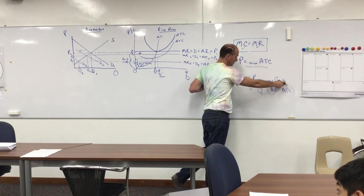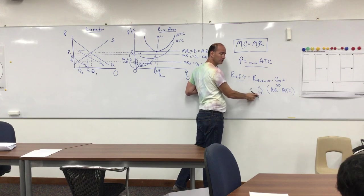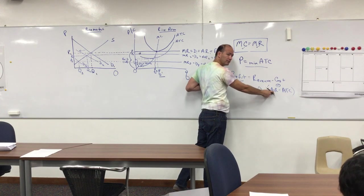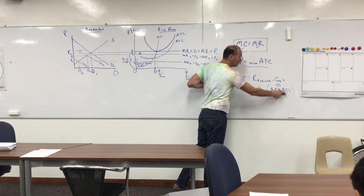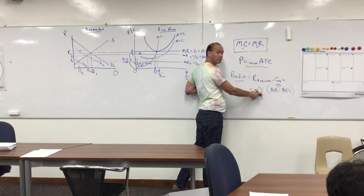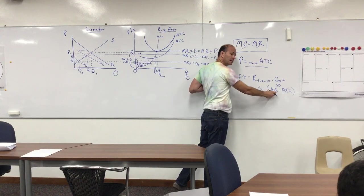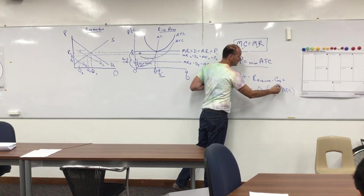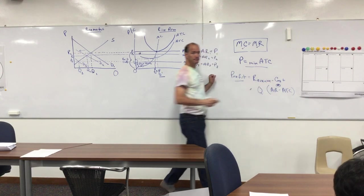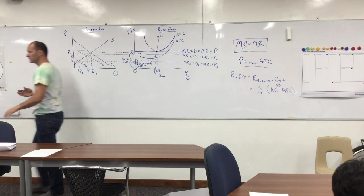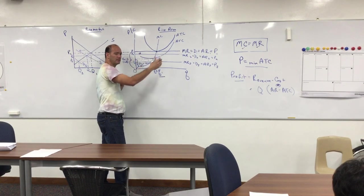We know the business is making a loss. Profit is revenue minus cost, or quantity sold times (average revenue minus average total cost) — that's per-unit profit times quantity equals total profit. If average cost is greater than average revenue, profit is negative. In the long run, if the business is making less than average cost, it should exit the industry.